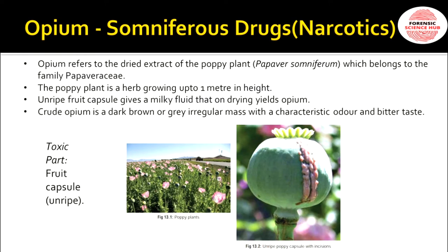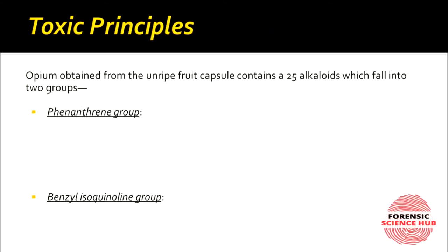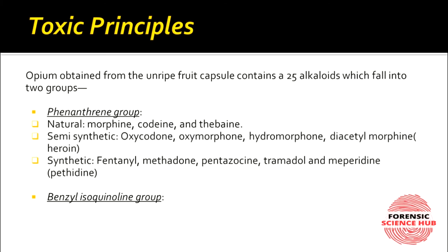The toxic part is the fruit capsule. Opium obtained from the unripened fruit capsule contains 25 alkaloids in total. These 25 alkaloids mainly fall into two categories: the phenanthrene group and the benzylisoquinoline group.